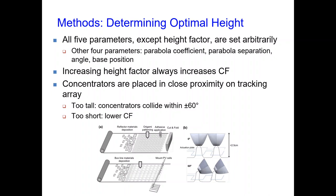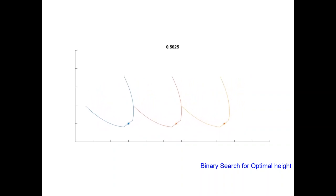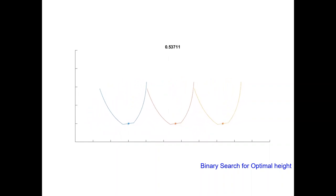Height factor is dependent on the other four parameters because of the tracking array we use with our concentrators. If we set the height factor too high, the concentrators will intersect while they are rotating. If we set the height factor too low, the concentrators won't be collecting all of the light that they could be. In order to determine the optimal height factor, we use binary search: if the concentrators collide while rotating, we decrease the height factor; if they complete a full rotation without colliding, we increase the height factor.